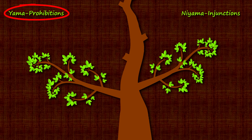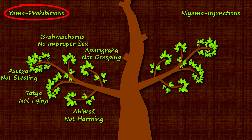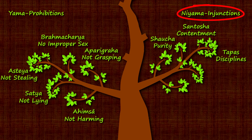Let's examine each of the angas very briefly. There are five yamas that prohibit five kinds of adharmic behavior. Ahimsa prohibits causing harm to any living being. Satya prohibits lying. Asteya prohibits stealing. Brahmacharya prohibits inappropriate sex. And Aparigraha prohibits possessiveness.